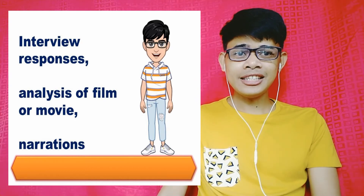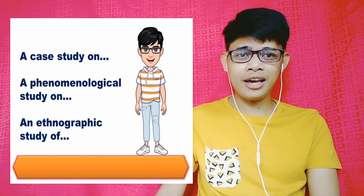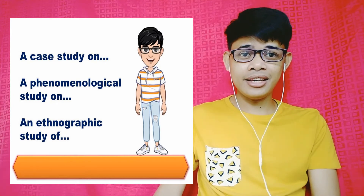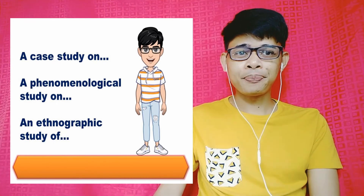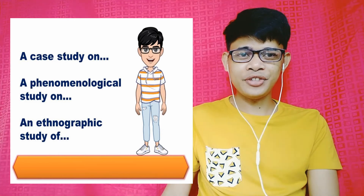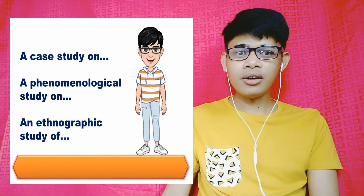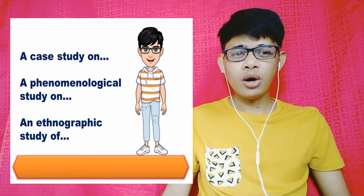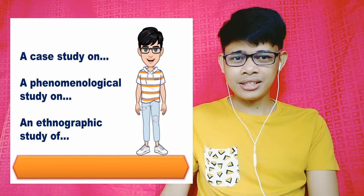You can easily identify if a research title is qualitative because it has certain phrases — for example, 'a case study on.' A case study is one type of qualitative research. Another is 'a phenomenological study on' — phenomenology is one type of qualitative research. And another one is 'an ethnographic study of' — ethnography is also one type of qualitative research. Oftentimes, you will easily identify it by spotting these phrases or terms.